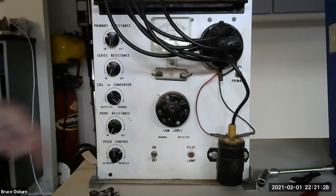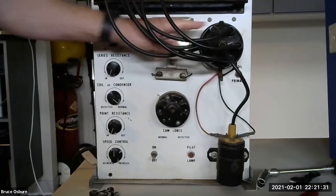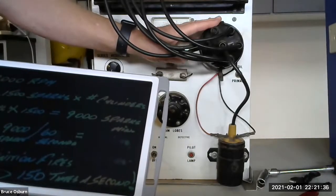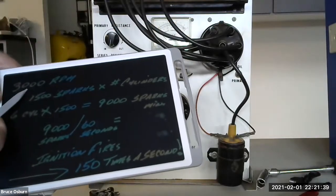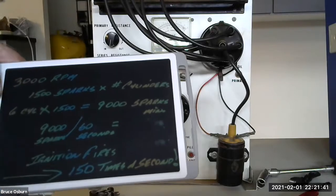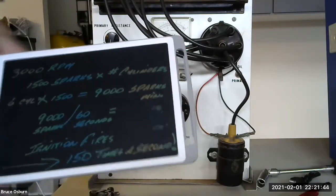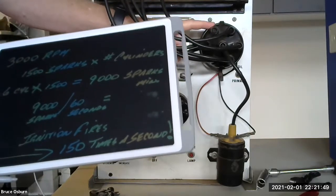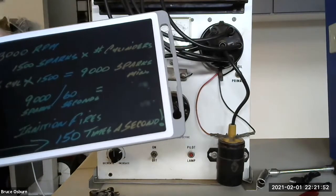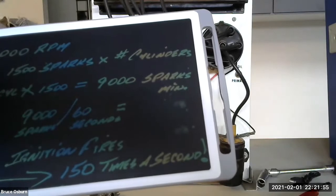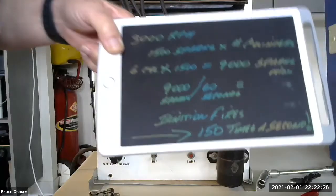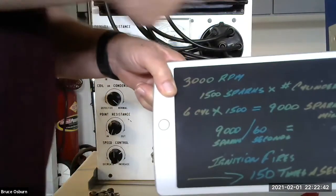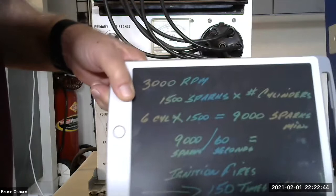Not only that, but this guy here, remember, the distributor is spinning at half the speed of the engine. So the distributor is spinning 1,500 times per minute, delivering spark to all those plugs. Divide 60 into 1,500, and that means your distributor is spinning around one full revolution 25 times per second.